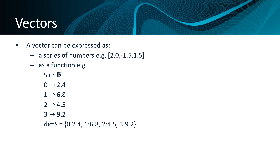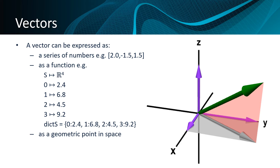This can be represented as a dictionary where each of the positions within the vector maps to their actual values. 1, 2, and 3 vectors can also be represented as a geometric point in space. A 1-vector would be a single point along a single axis. A 2-vector, like the silver line shown here, shows a point in two-dimensional space. A 3-vector, like the green line shown here, allows us to pinpoint a place in three-dimensional space.